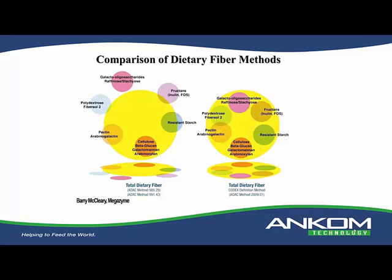You can see there are a number of components either not captured or only partially captured in those two methods. When you go to the Codex definition on the right-hand side, there is a bit more detail in what constitutes dietary fiber. For instance, it captures all of the resistant starch — not just RS1 and RS2 — all the fructans, all the NDOs.